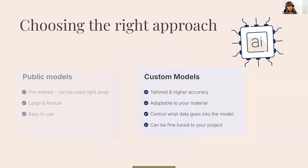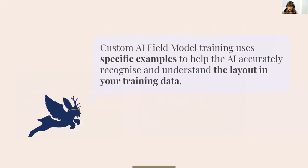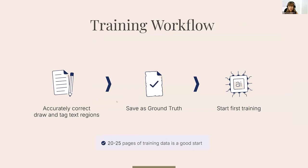If there are no public models for your layout, you need to train a custom model — similar to text recognition models. A custom model is adaptable to your material and you control what data goes into it, including the layout. The custom AI field model training uses annotated examples to help the AI accurately recognize and understand the layout. The workflow is: draw regions, save as ground truth, then start training.